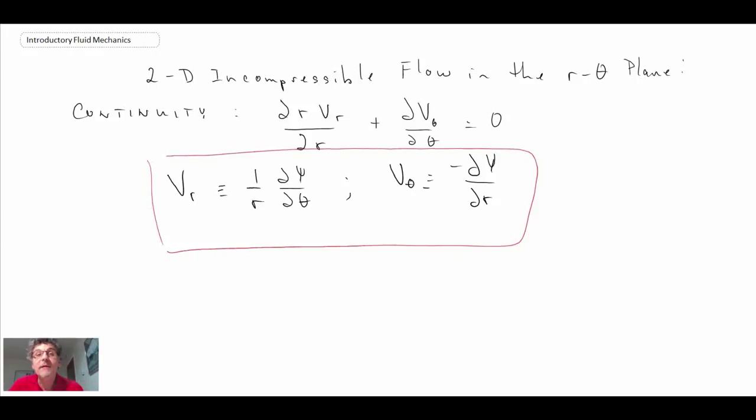What this segment has told us is that the difference between stream functions is equal to the volumetric flow rate. We'll continue on in the next segment looking at an example where we will solve for the stream function given a velocity field.